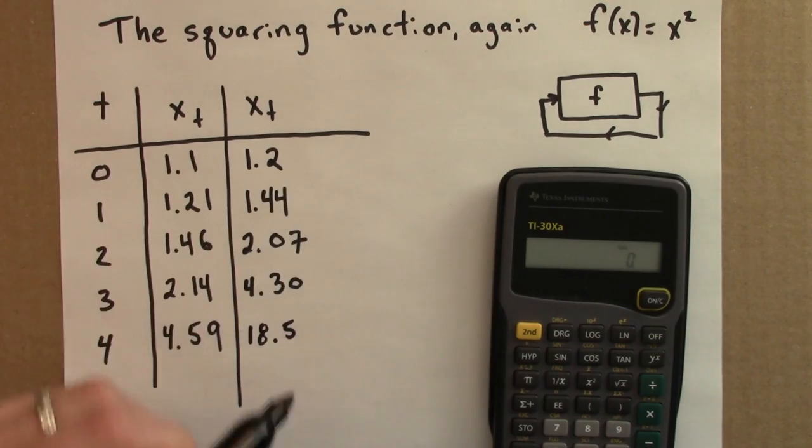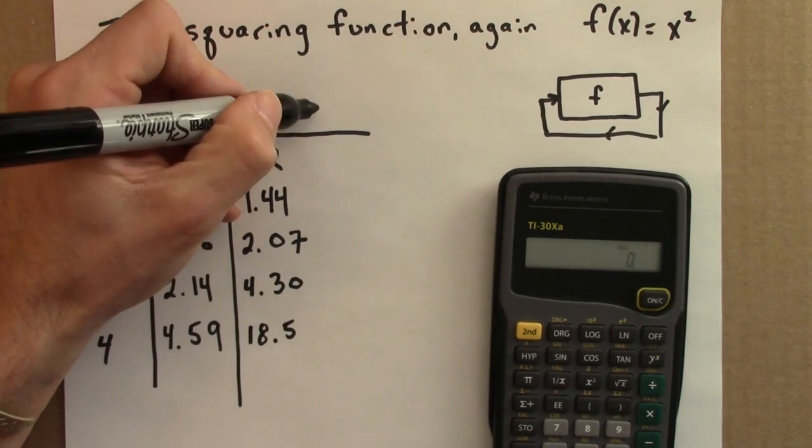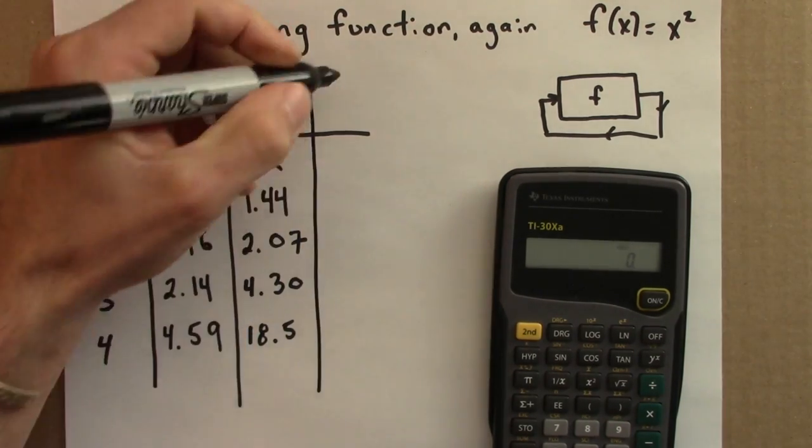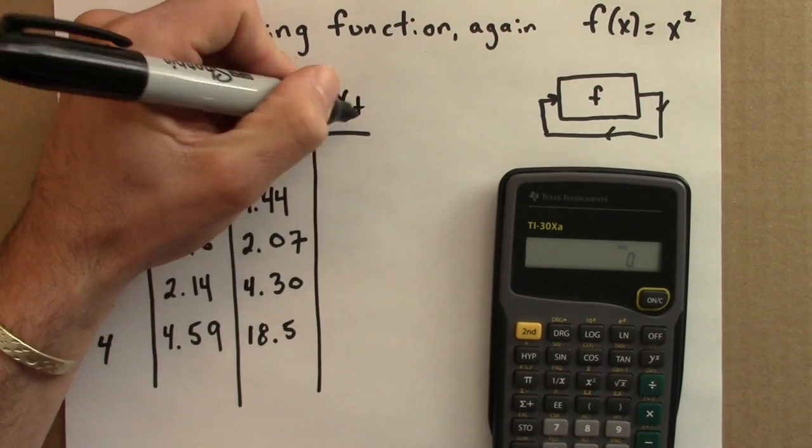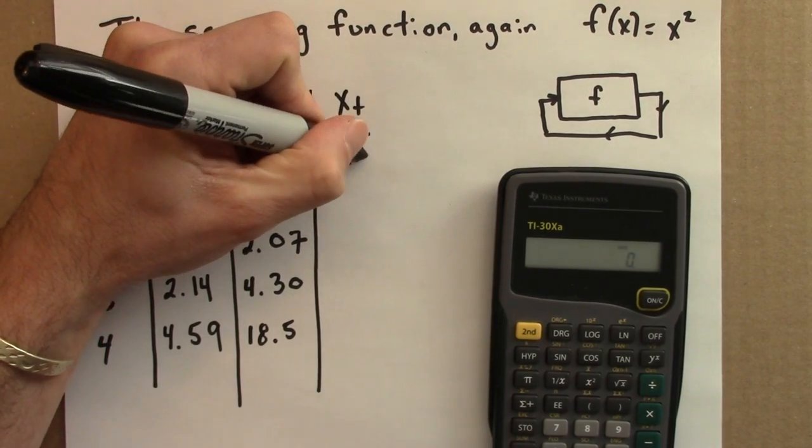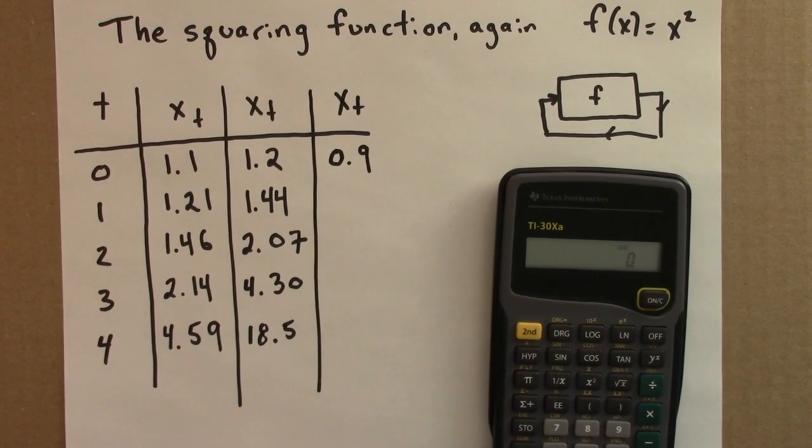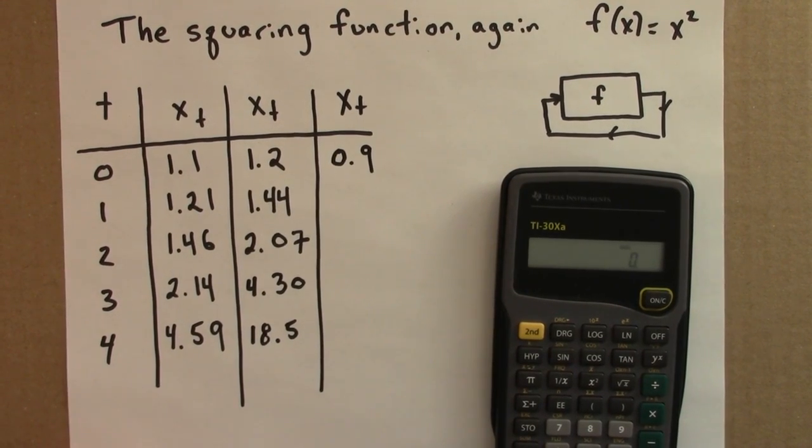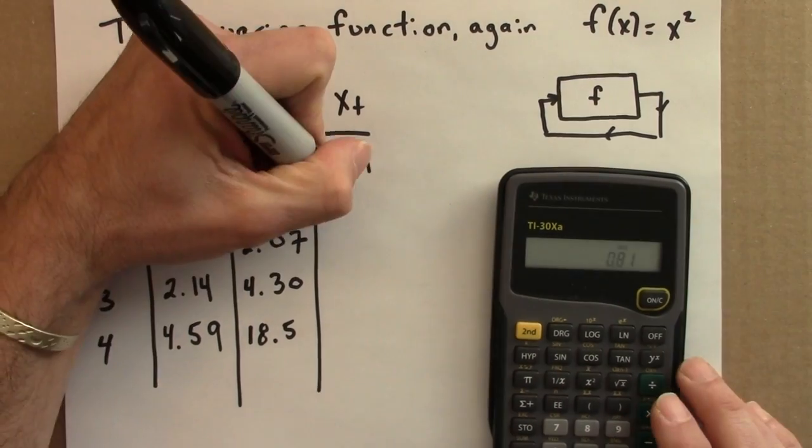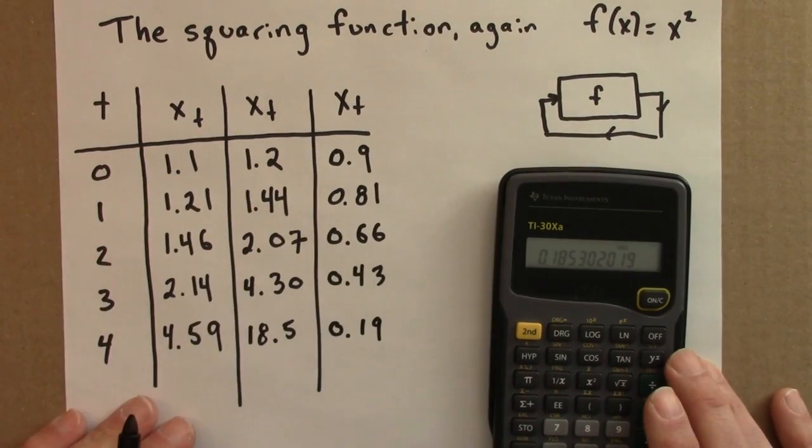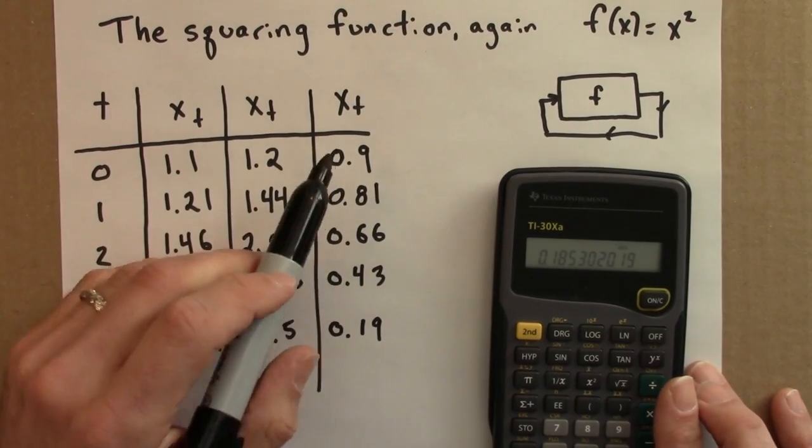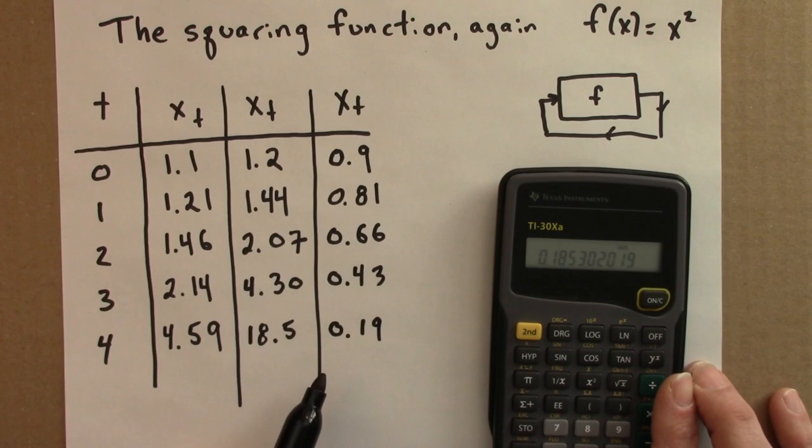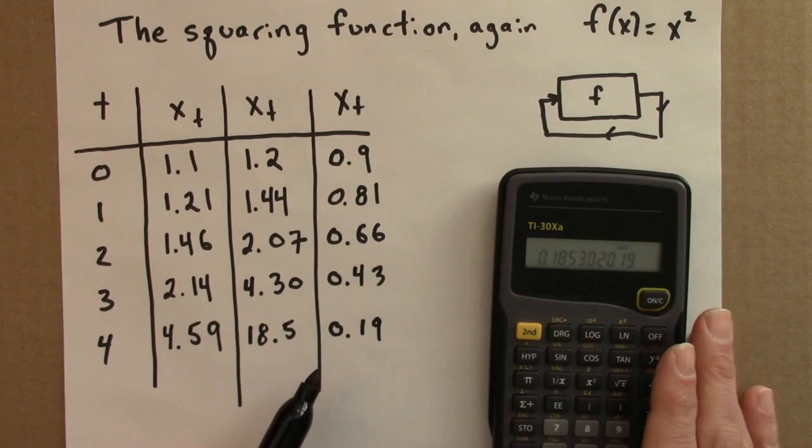Let's try another one. Suppose I chose a seed of 0.9. I'll put 0.9 here. What will happen? Well, let's apply the function and see. For this initial condition, the number gets smaller. It's getting closer and closer to 0. If you square a number between 0 and 1, it gets smaller, not larger.